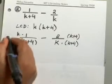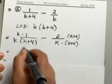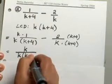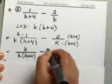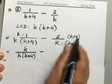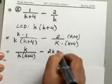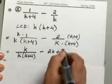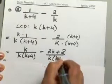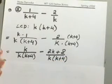And what will that give us? You will end up with K over K times K plus 4 minus, again, go ahead and distribute the two with the K plus 4, which will give you 2K plus 8 over K times K plus 4.